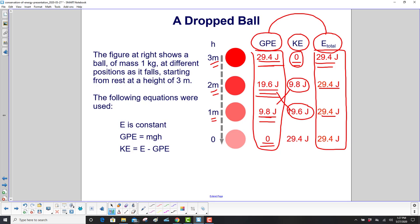And then finally at the bottom, it's all kinetic energy. So what's happening to this ball as it falls? It keeps getting more kinetic energy, which means it's speeding up, which makes sense because gravity is accelerating it downwards.